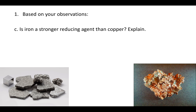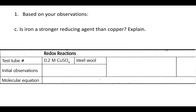For part C it says: is iron a stronger reducing agent than copper? And explain. On the bottom left I have a picture of iron and on the bottom right a picture of copper. You want to look at the reaction between the blue copper(II) sulfate liquid and the steel wool that you put into it. Write the steel wool as solid iron — capital F, lowercase e, that's the symbol for iron. Write out the molecular equation, identify the oxidation numbers of each element on both sides, and see which one is oxidizing — whichever element becomes more positive going from reactants to products. That is the reducing agent.